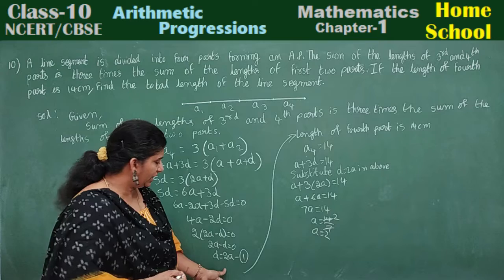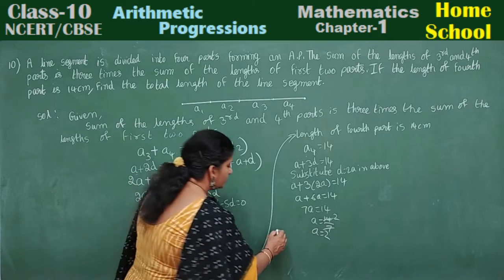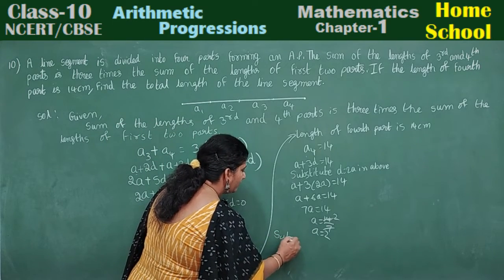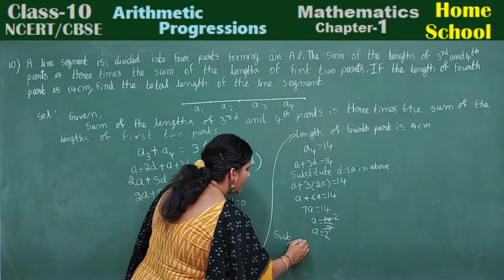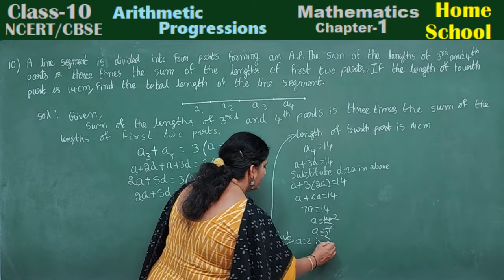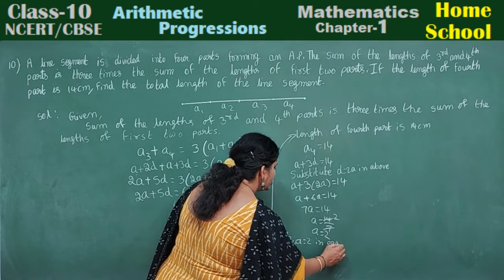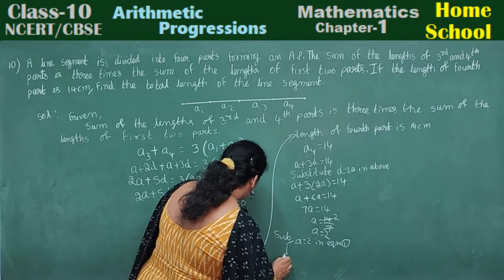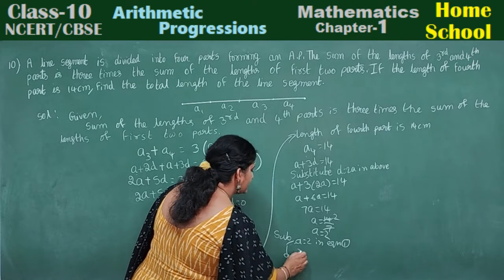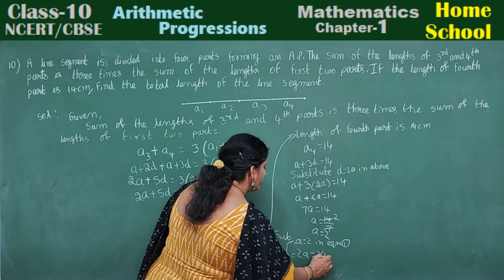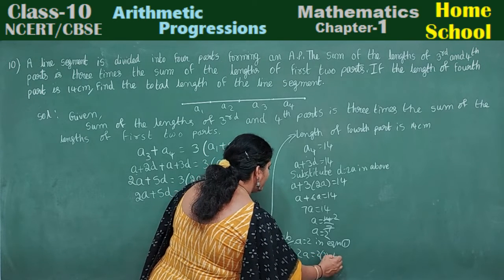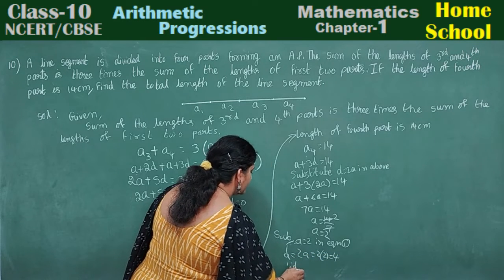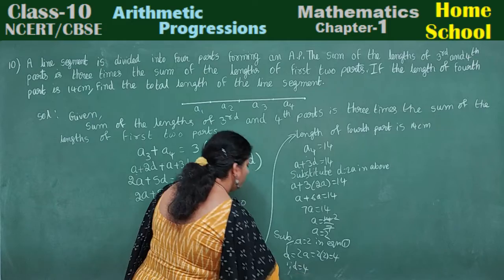Substituting d equals 2a: a plus 3 times 2a equals a plus 6a equals 7a equals 14, so a equals 2. We substitute a equals 2 into equation 1, which is d equals 2a: d equals 2 into 2, therefore d equals 4.